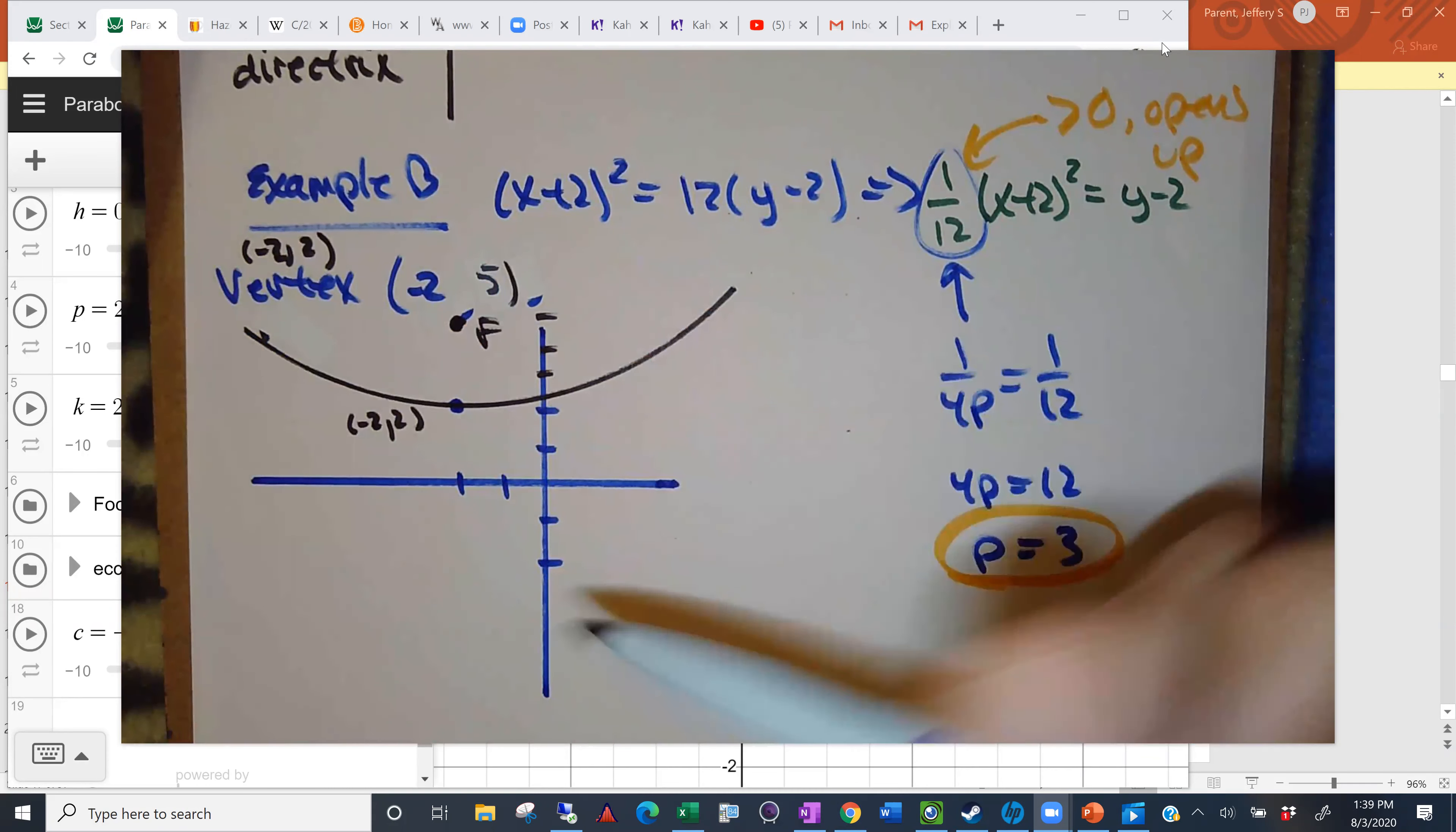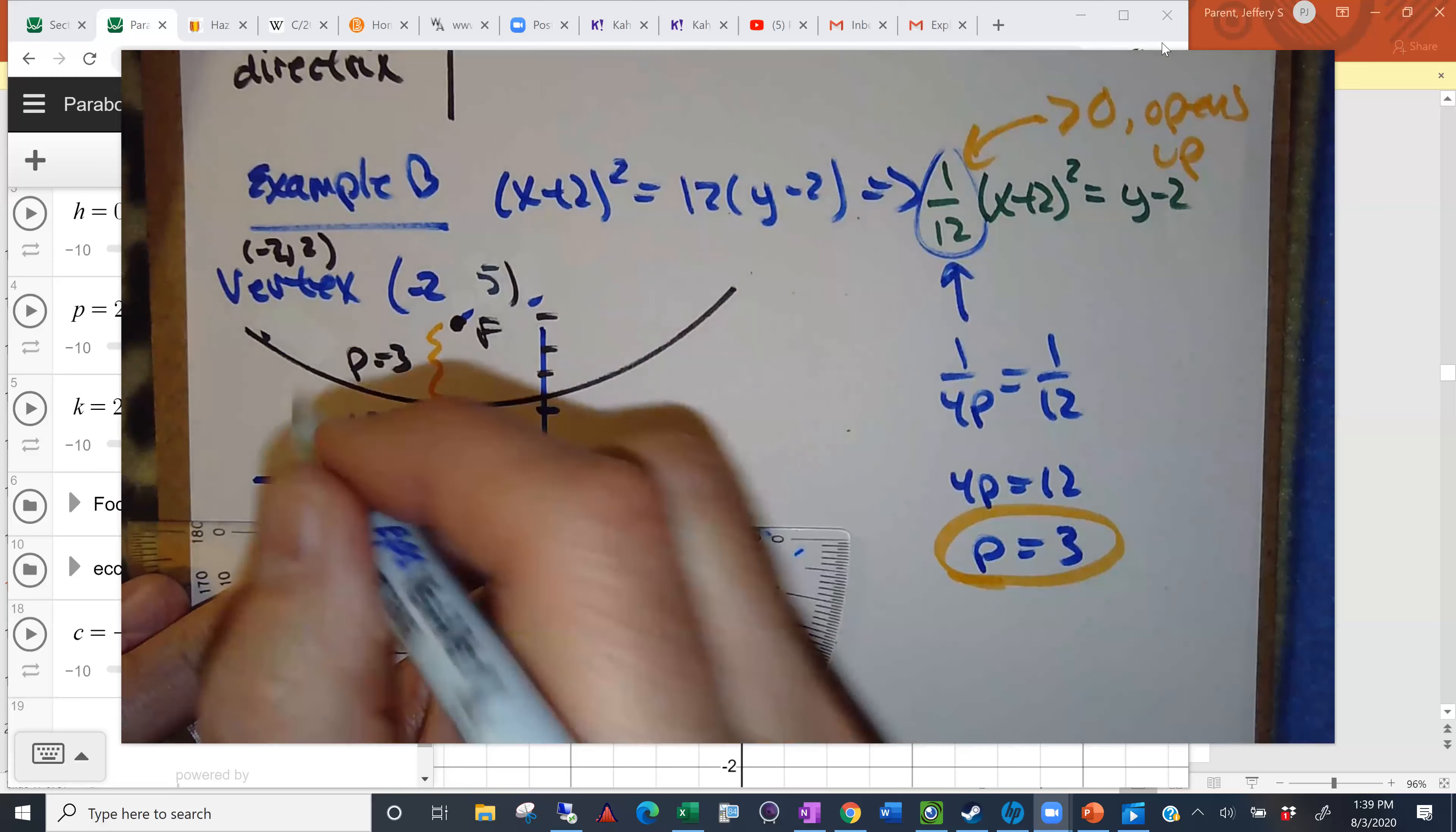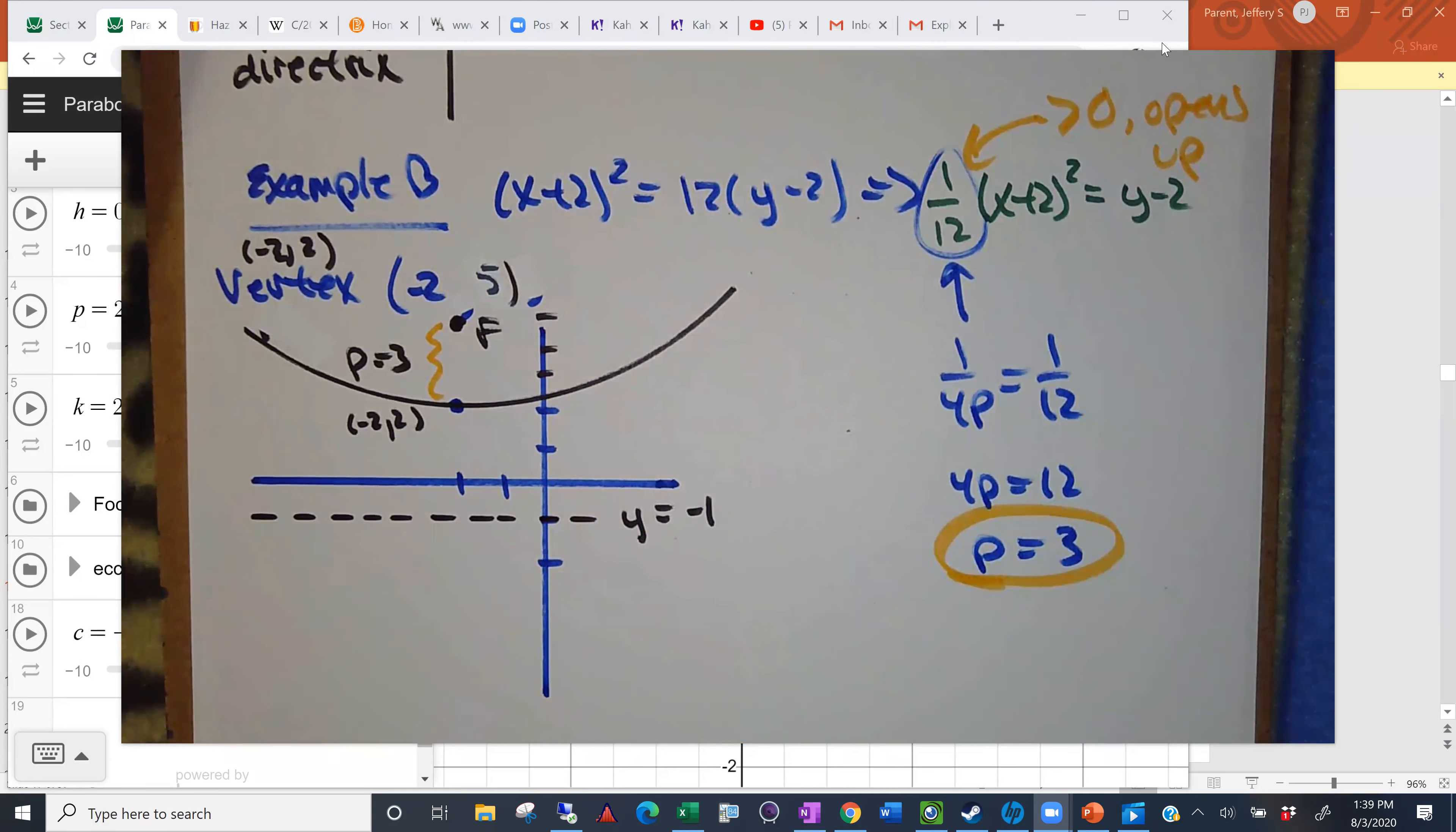Let's figure out where the directrix is. We got this nice focus here, p equals 3. Jackson, where's the directrix gonna be? At y equals negative 1. Well done, so y equals negative 1. Again, a distance of 3 away from the vertex. Beautiful. That's a lot of what we're looking for.